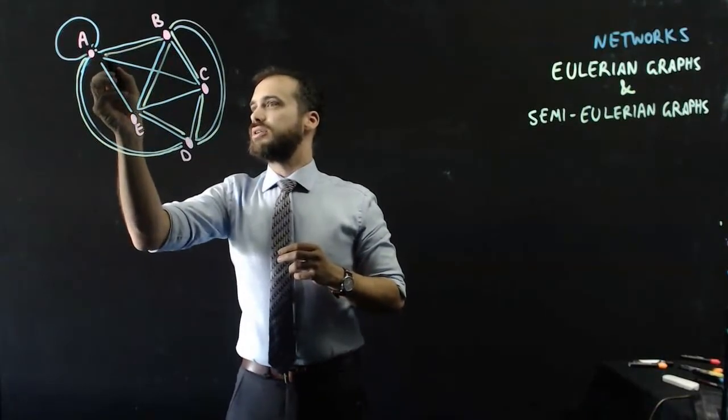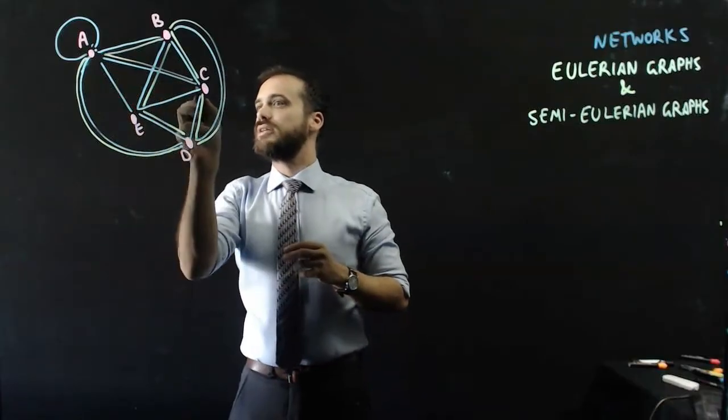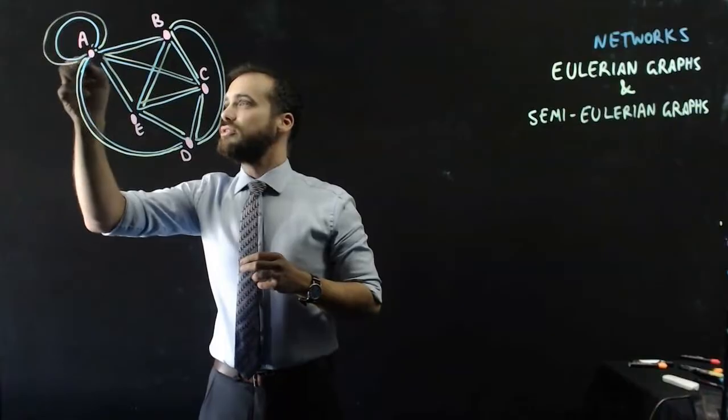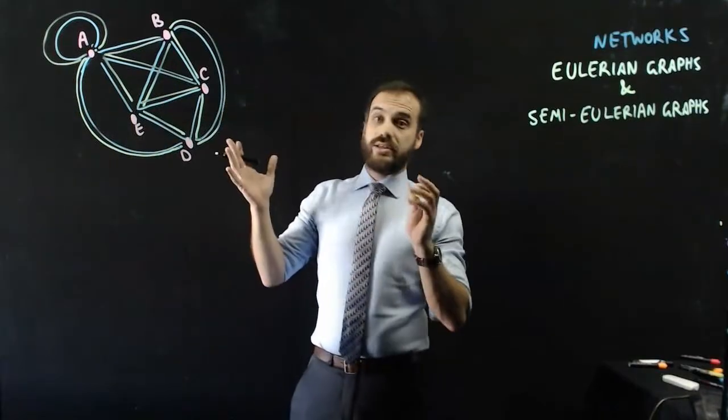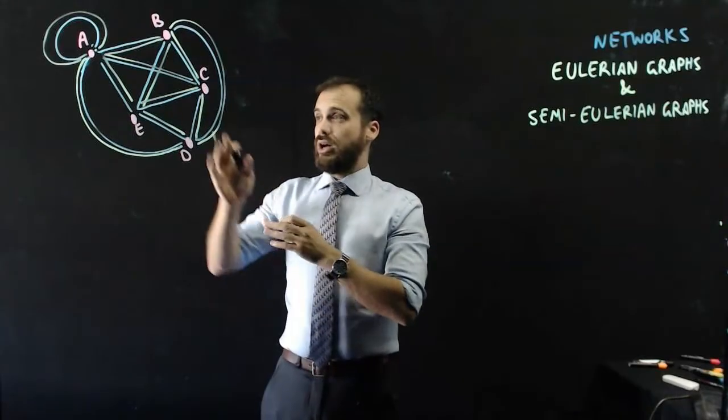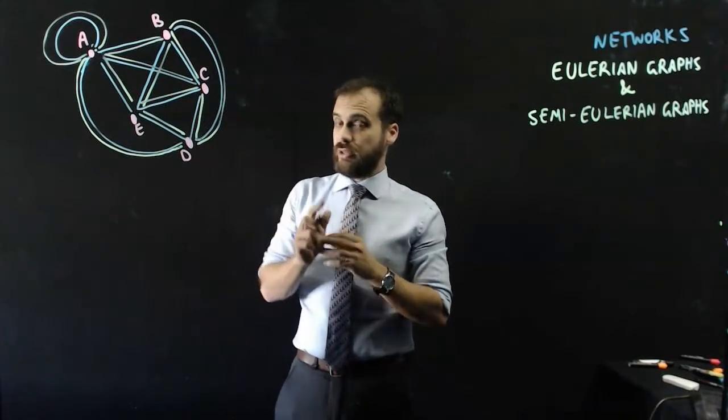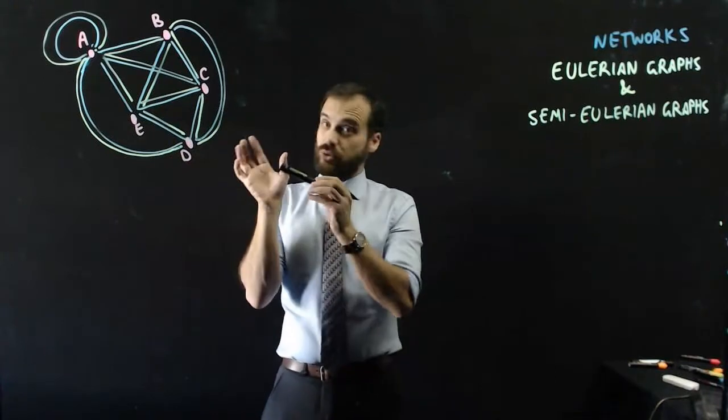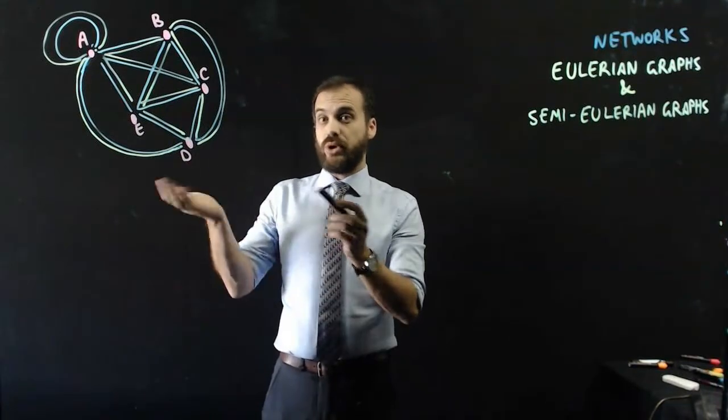And then let's go to C and then let's go to E and then let's go back to A and then let's do the final loop and that's it. I went to every vertex multiple times, I covered every edge exactly once and I got back to where I started. This is an Eulerian graph because it's possible to do that.